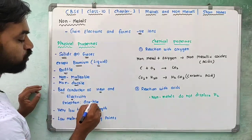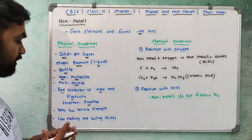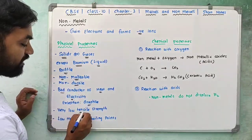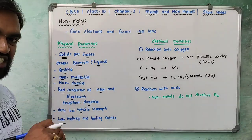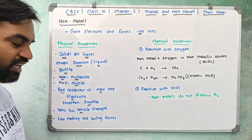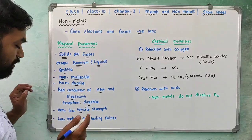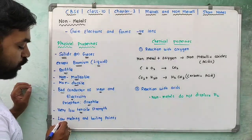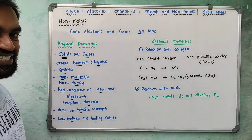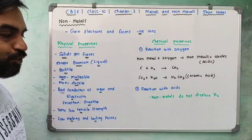Exception: graphite conducts both electricity and heat. Non-metals have very low tensile strength and low melting and boiling points — they are easy to melt or boil at very low temperatures.